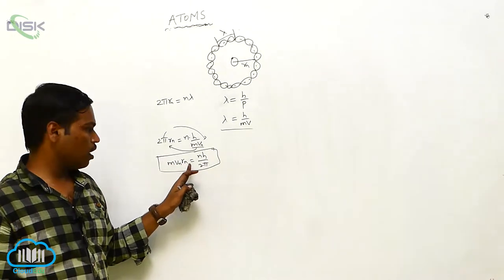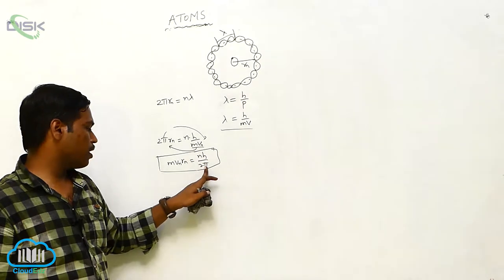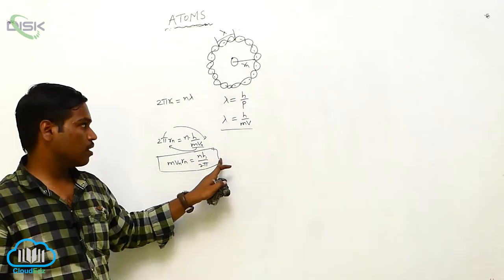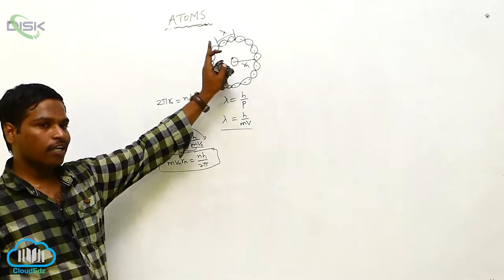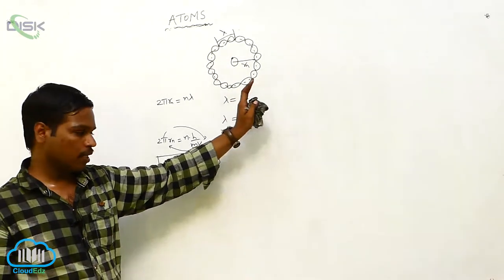The angular momentum of an electron is equal to the integral multiple of h by 2π, where h is Planck's constant. This was proved and explained by de Broglie.